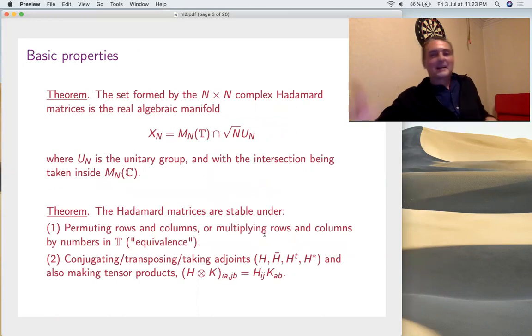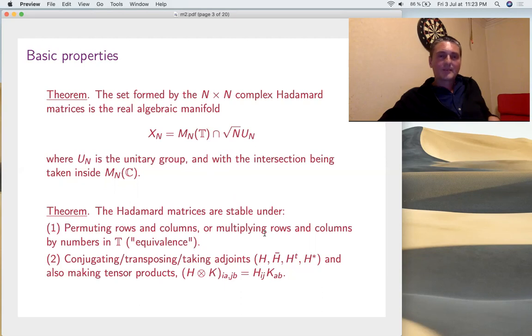Let's start with some basic properties, exactly what we knew from the real case, but we can recycle that in this setting. So first of all, the orthogonal condition between rows means that it's a unitary matrix up to a square root of N scaling. The set formed by this N times N Hadamard matrices is this guy here, M_N of T, and the rows must be orthogonal.